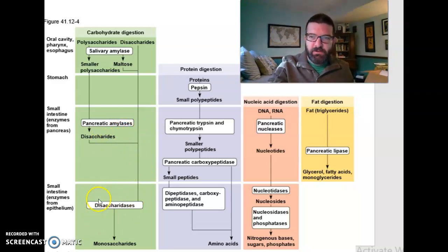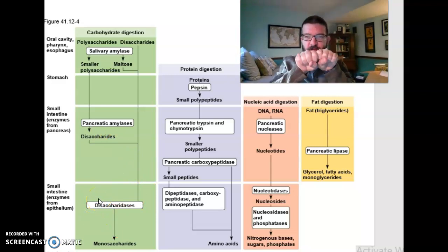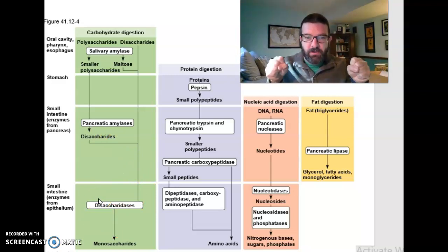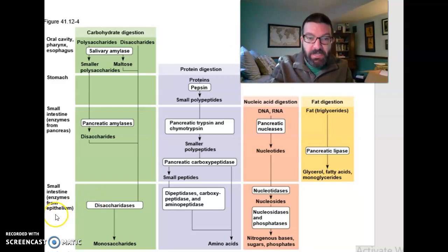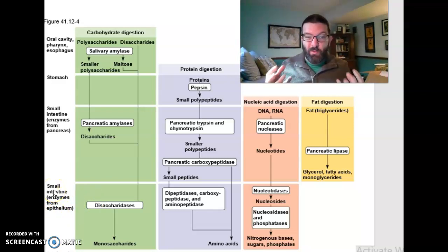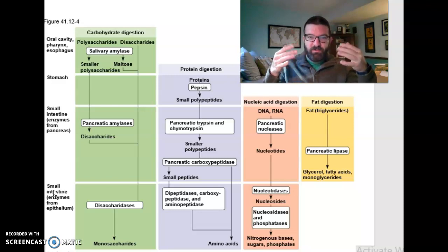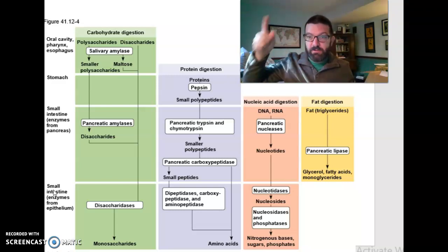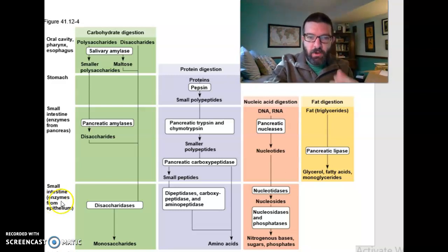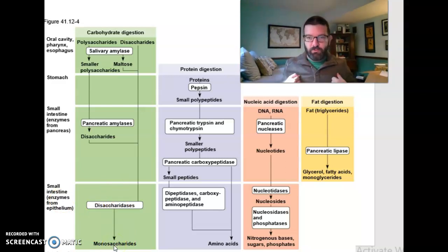The very last bit of digestion — those disaccharides get broken apart into monosaccharides like glucose — occurs with enzymes that are stuck in the wall of your intestines, in the epithelium. You have these little villi that increase the surface area of the wall of your intestines. The wall looks very fingery, because wavy means higher surface area for absorption. On those villi, you have enzymes that break disaccharides into monosaccharides, and then you can absorb glucose across the intestinal wall.